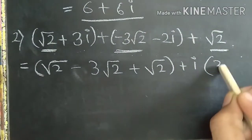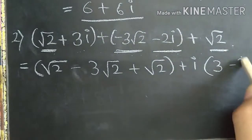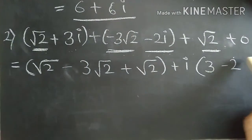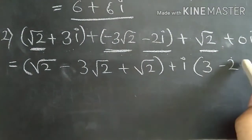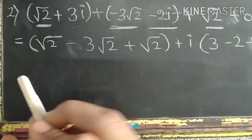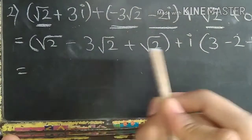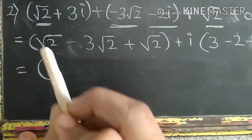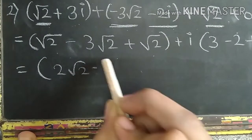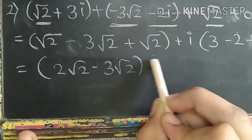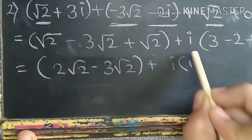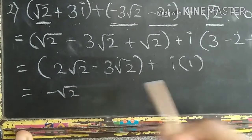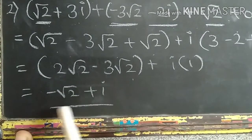The imaginary coefficients are 3, minus 2, and 0, so imaginary part becomes I times 3 minus 2 which is 1. For the real parts: root 2 plus root 2 is 2 root 2, minus 3 root 2, so 2 root 2 minus 3 root 2 equals minus root 2. So the answer is minus root 2 plus i.